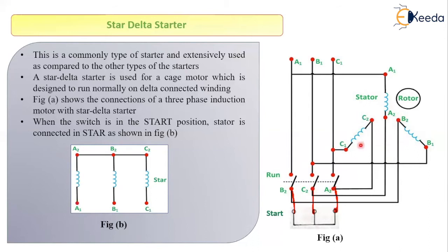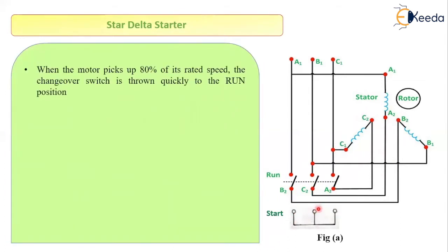In this condition the stator of our induction motor will be connected in star, just as shown in figure B. Initially the connections are such that our stator is connected in star. Once the motor picks up about 80% of its rated speed, the changeover switch will be thrown to the run position.